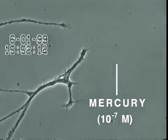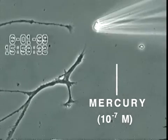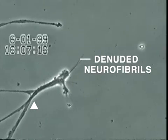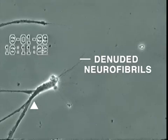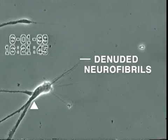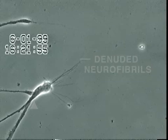Over the next 30 minutes, the neurite membrane underwent rapid degeneration, leaving behind the denuded neurofibrils seen here. In contrast, other heavy metals added at this same concentration, such as aluminum, lead, cadmium and manganese, did not produce this effect.